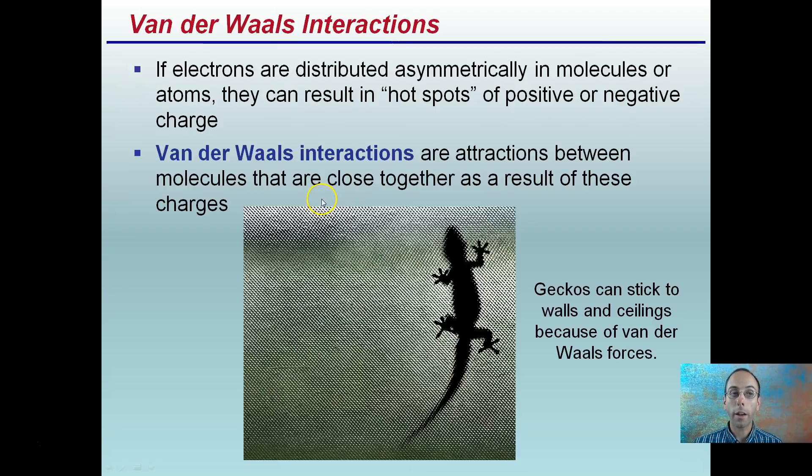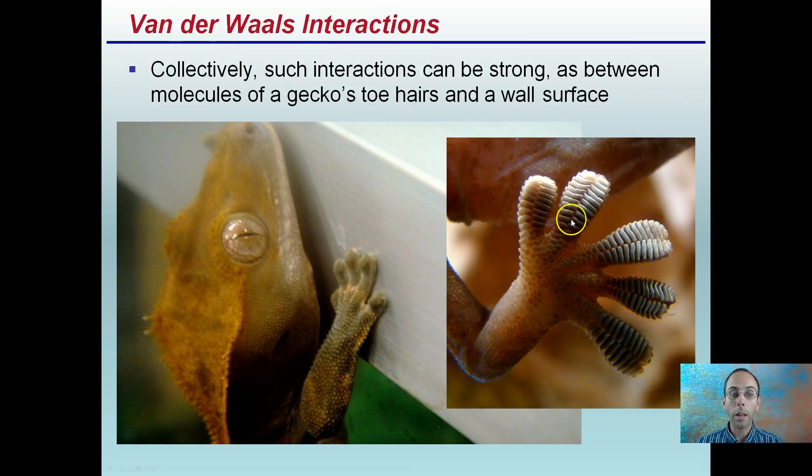So we have something called van der Waals interactions. If electrons are distributed asymmetrically in a molecule or atoms, this can result in hotspots of positive and negative charges. These van der Waals interactions are interactions between molecules that are close together as a result of these charges. And geckos kind of use this as their ability to stick to walls and ceilings because of these particular interactions that occur. So you see a little close-up here. Collectively, such interactions can be strong because there's a lot of surface area here, a lot of opportunities for these van der Waals interactions to occur. And this is because of the toe hairs. This is what allows geckos to cling or kind of stick to wall or ceiling surfaces, allowing them to run up that area.